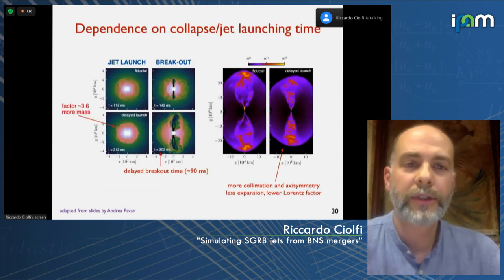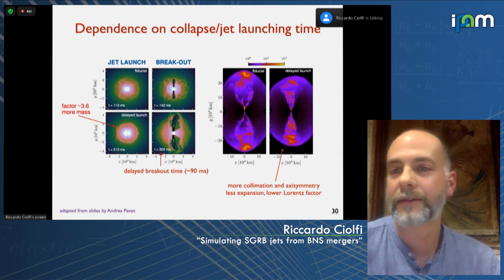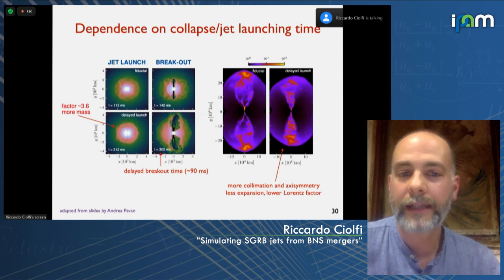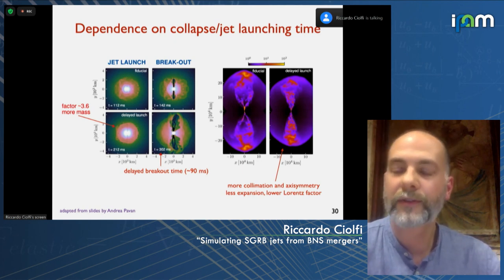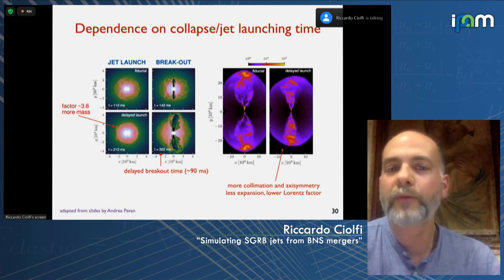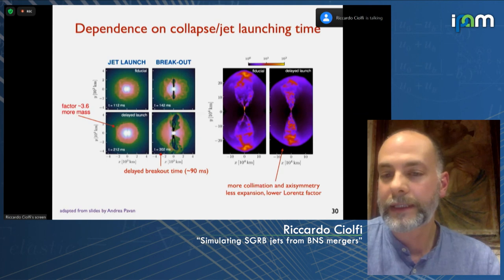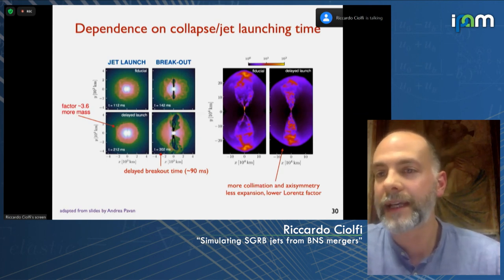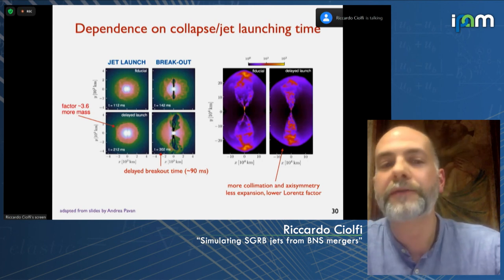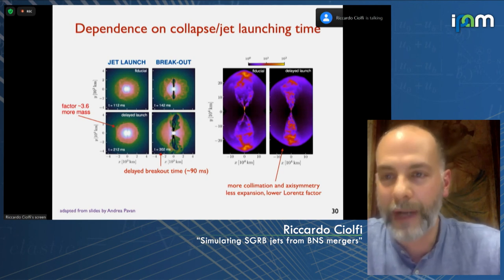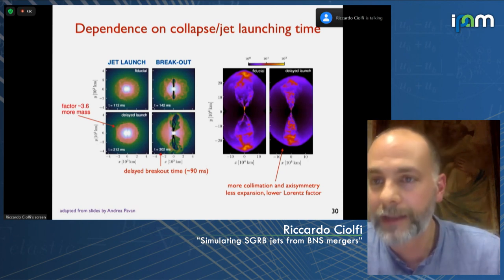The last simulation considers different collapse times — different jet launching times — with 200 milliseconds instead of 100 milliseconds for the fiducial model. The jet has to go through an environment about three times more massive, making breakout happen three times later, with somewhat lower Lorentz factor and a more axisymmetric, more collimated final profile due to the thicker environment. As expected, we confirm that the delay time between the merger and the jet launch can have a major impact, and this gives good prospects for measuring this parameter from observations, at least in principle.